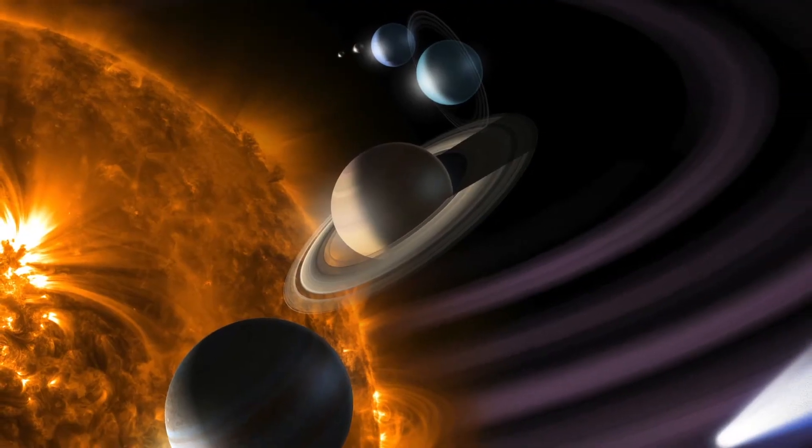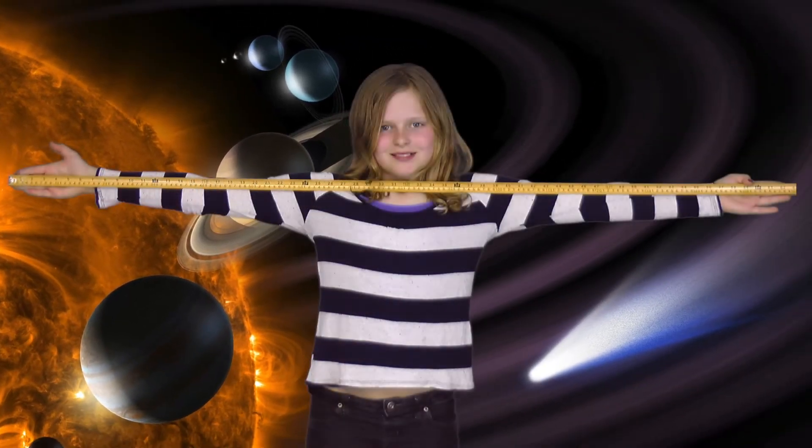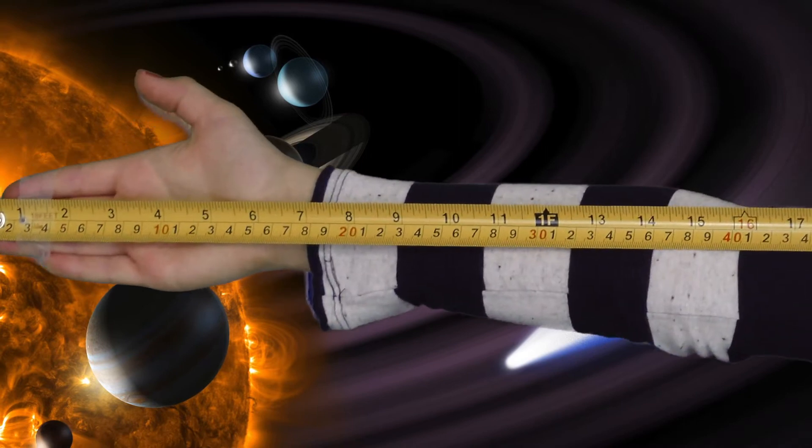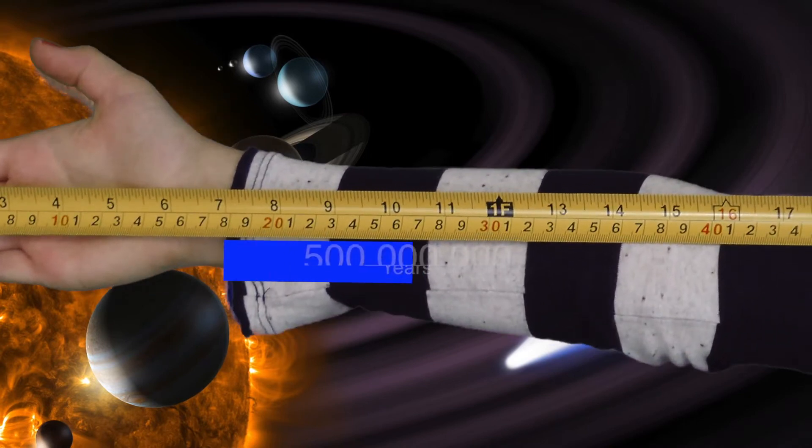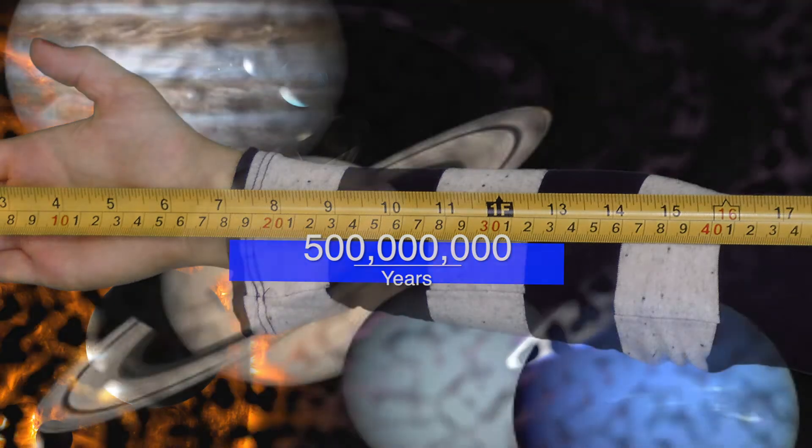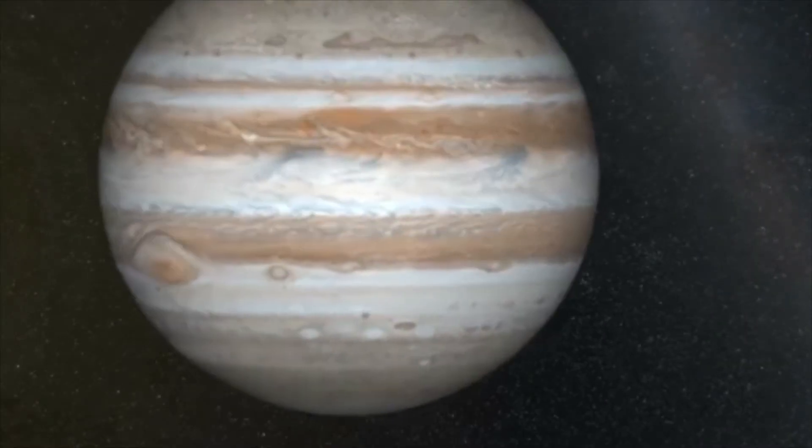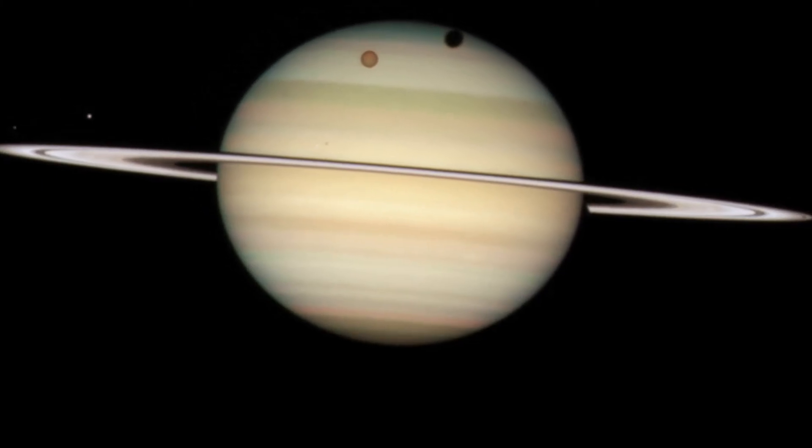Then things settle down. The collisions end, the planets cool, and pretty much nothing else happens. But disaster is only six more inches away, half a billion years. You see, the giant planets Jupiter, Saturn, Uranus, and Neptune have been in a dance with each other. Jupiter moves inwards towards the sun, but is stopped when it reaches a two-to-one resonance with Saturn.